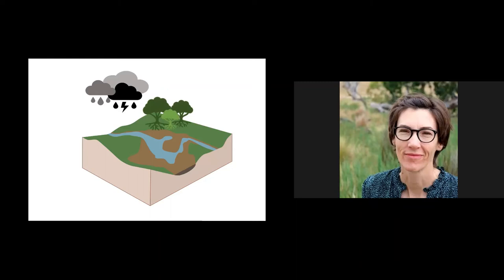We can help the wetland do some of its work by planting trees around the edge, or keeping the trees and shrubs already there. This is great for biodiversity — we get more bugs, birds, and lizards. The native vegetation also helps slow down the water going into the wetland and improves the strength of that filtering of carbon, nutrients, and pollutants.